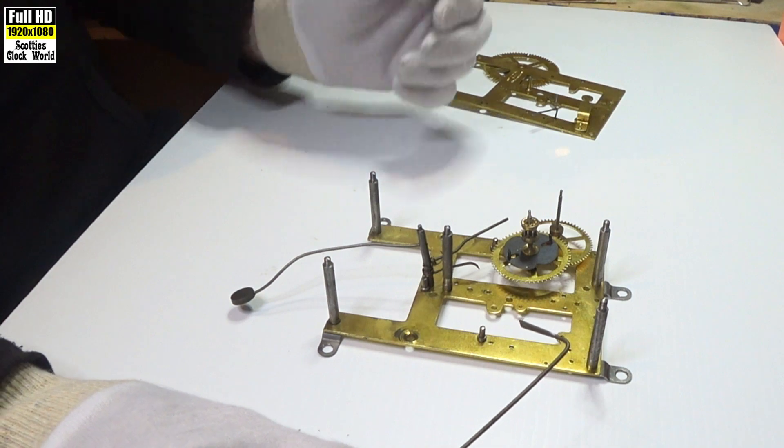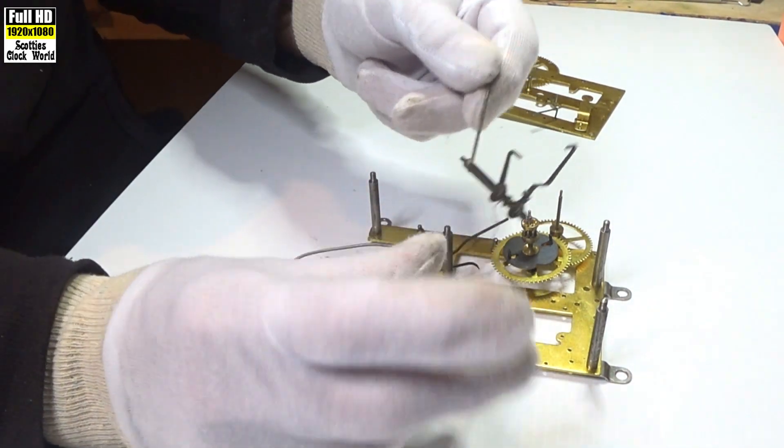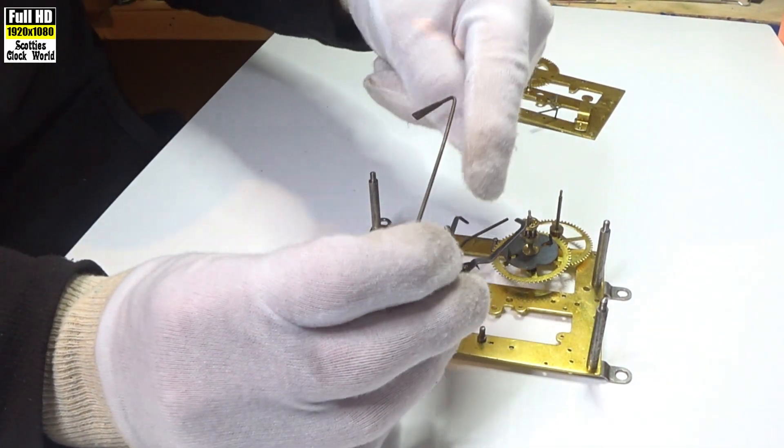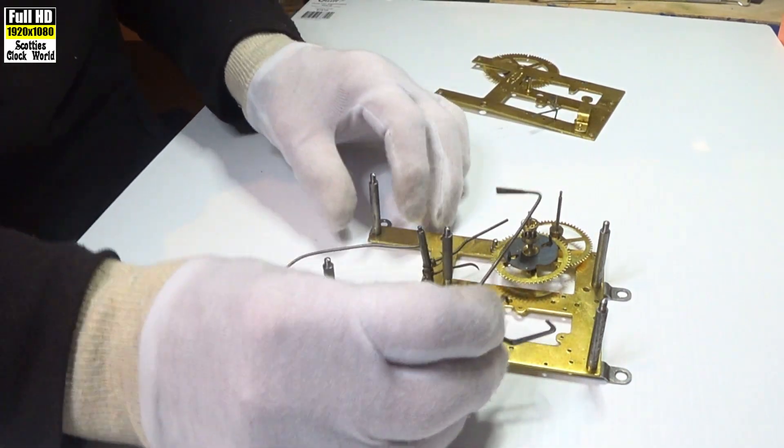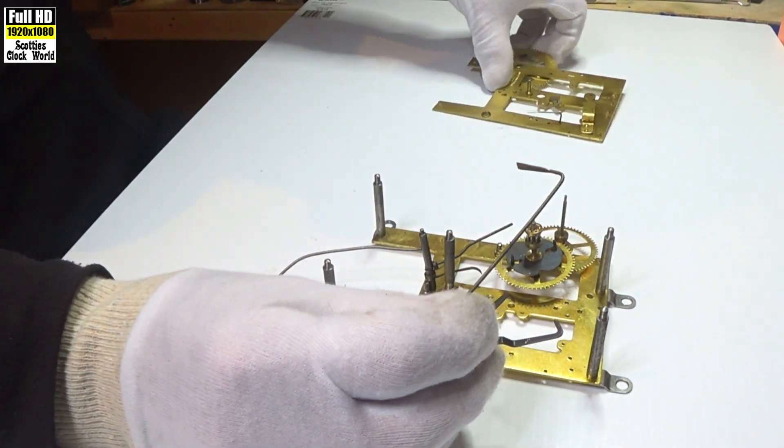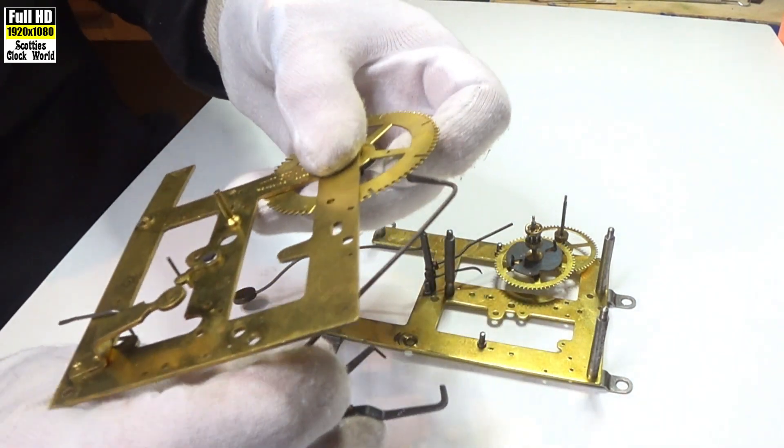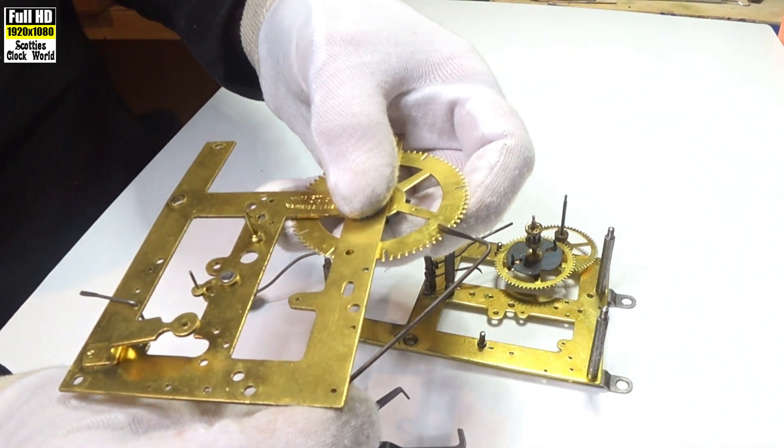On an American clock from the 1900s to work correctly, you have to align those three levers. The first one, as I said, goes into the count wheel.